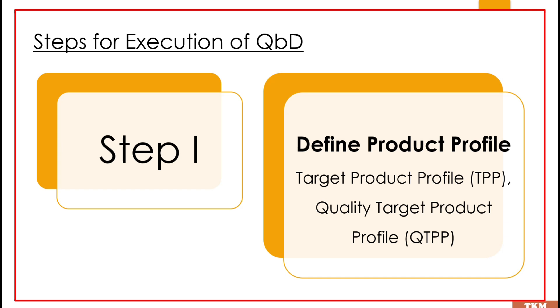Based upon that, there are two types of product profile. One is the target product profile, which we call TPP, and the second one is the quality target product profile, which we call QTPP.